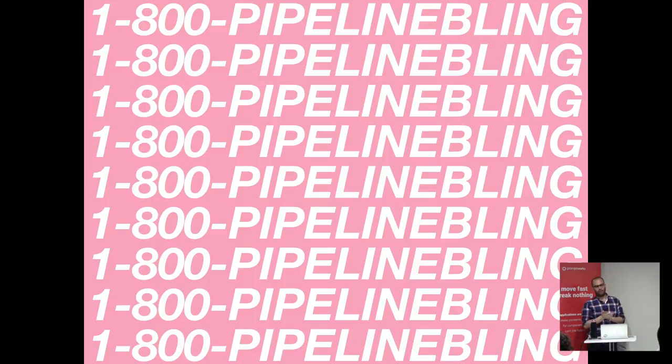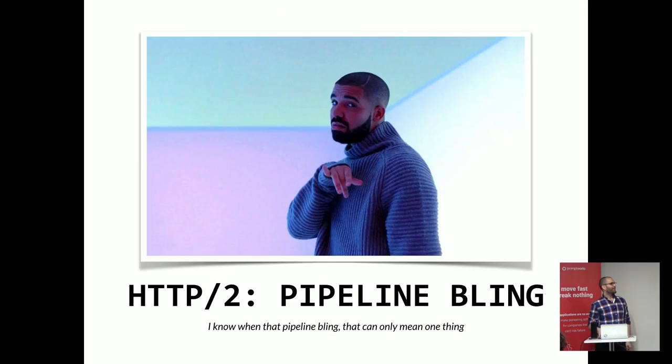My name is Hector. I'm going to be talking about HTTP/2. The name of this talk is HTTP/2 Pipeline Bling. Before diving into HTTP/2, when you're about to create a new thing that's supposed to fix something that already exists, it's a good idea to understand why the thing you're replacing is not good — what are its weaknesses? That's what the people that created HTTP/2 attempted to do, and that's what I'm going to walk through here.